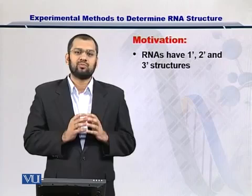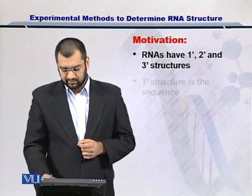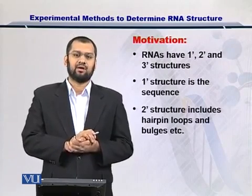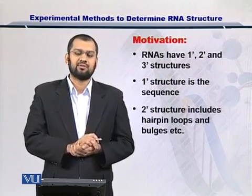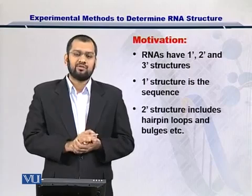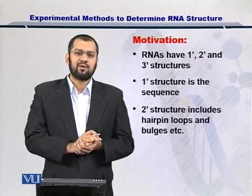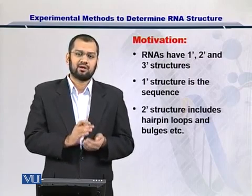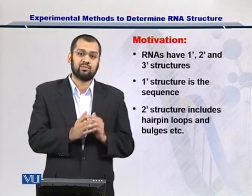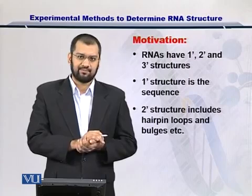The two prime structure essentially comprises hairpin loops, intersections, bulges, etc. Once this two prime structure is formed, the three prime structure comes into being as a result of interaction between the two prime hairpins, bulges, etc.